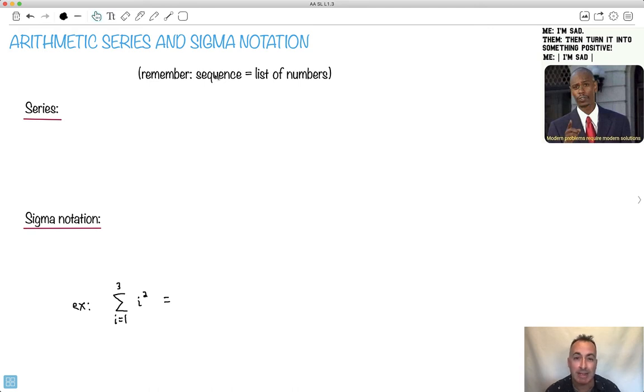So remember, a sequence. A sequence is just a list of numbers. And now we're going to be working, and remember what it means to be arithmetic. Arithmetic means, maybe I'll remind you here, arithmetic, remember, that has a common difference. That means it's a list of numbers where the difference is the same. So let me just do, that's at least what arithmetic is, just to remind you.